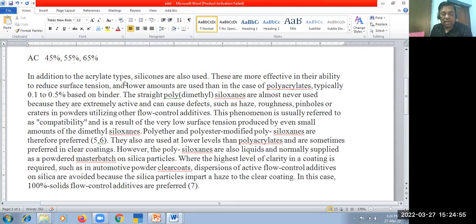In addition to the acrylic type, silicones are also used. These are more effective in their ability to reduce the surface tension, and lower amounts are used than in the case of polyacrylate, typically 0.1 to 0.5% based on the binder. So normally the polyacrylates are used as a flow control agent, but sometimes the silicones are also used to make surface tension low because its properties are more effective.